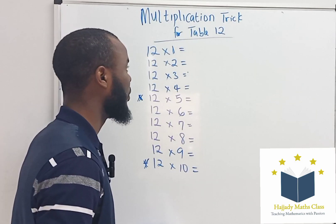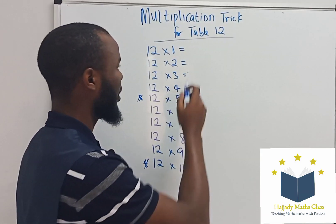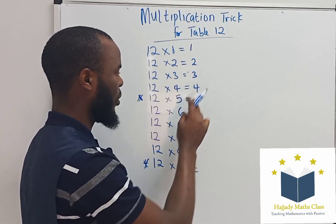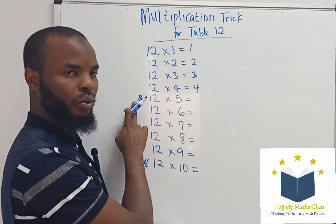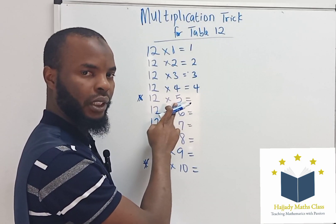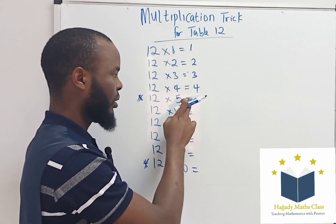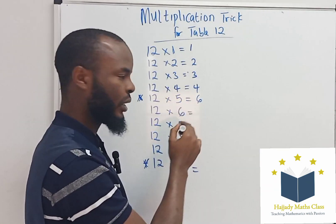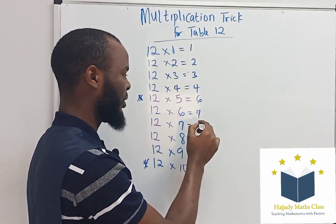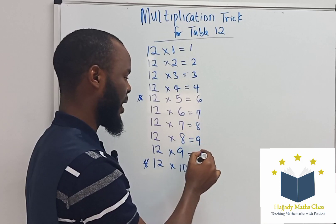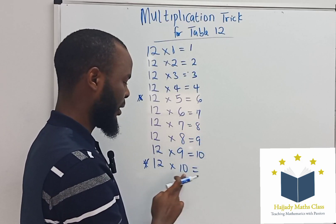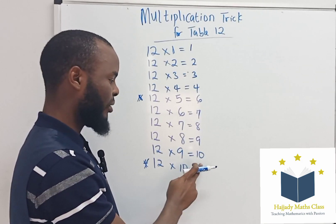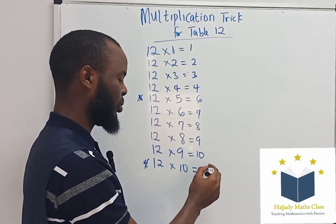So what we do — I'm going to start with 1, 2, 3, 4. Now look at this: at 12 times 5, the rule is going to change. Instead of writing 5, I'm going to move to 6, then 7, 8, 9, 10. The same thing changes at 10 — instead of writing 11, I'm going to move to 12.